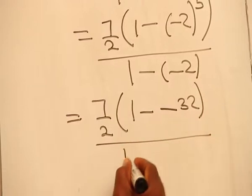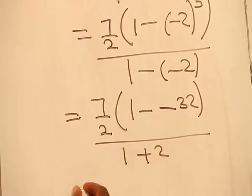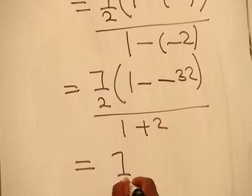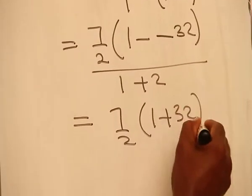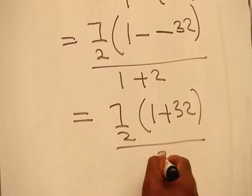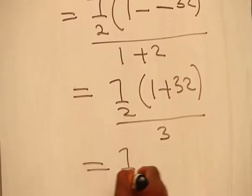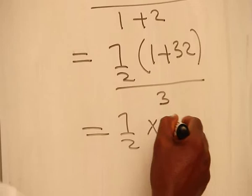this is 1 plus 2, giving you 7 over 2 times 1 plus 32, all over 3. And that means 7 over 2 times 33,